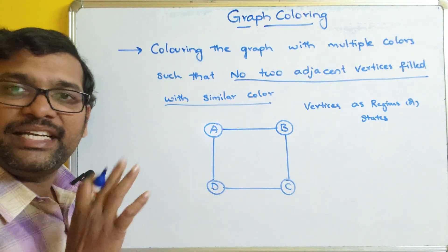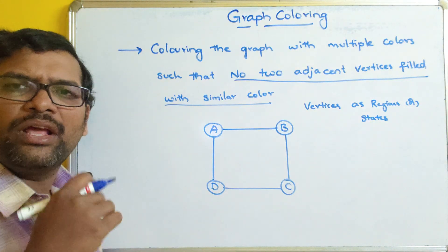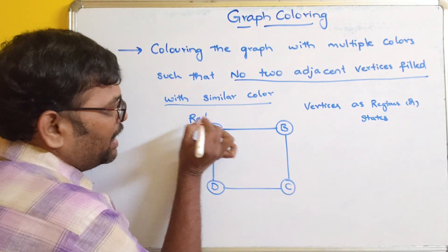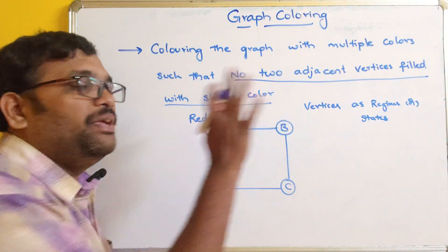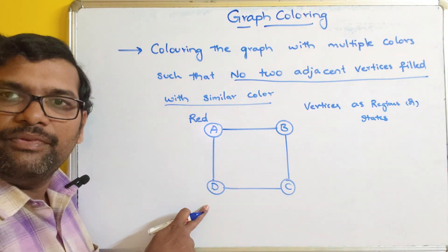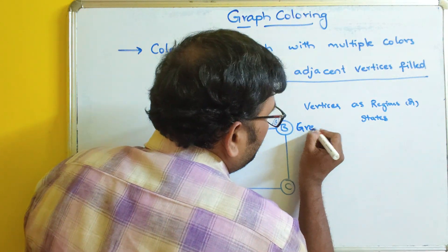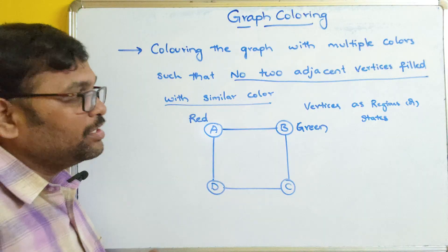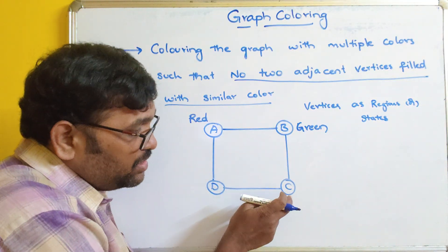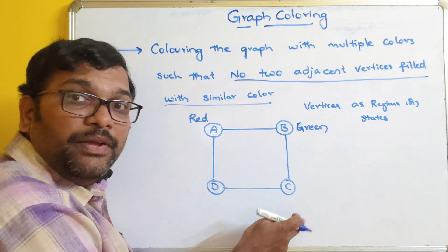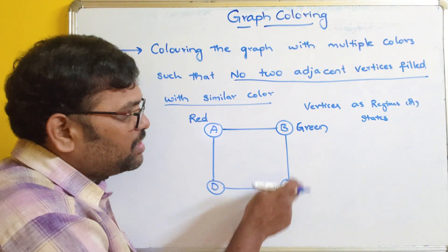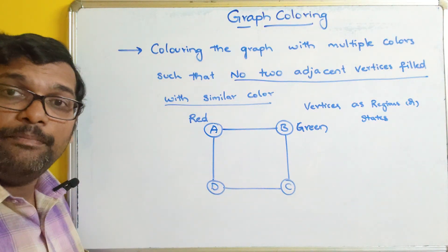Here there are four states, so we need to differentiate each from the other. By trial and error, start with A — fill A with red. So we can't fill D or B with red because the adjacent nodes of A are B and D. I will fill vertex B with green. The edges and vertices adjacent to B are A and C. A is already filled with red, so no problem. C should not be filled with green, so C can be filled with red because its adjacent nodes are B and D — B is green, so red is fine for C.